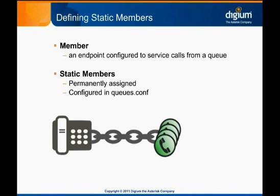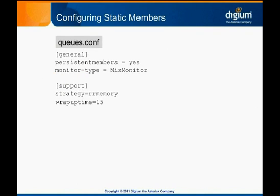Static queue members are configured directly in queues.conf. We will add our new static members to the queues.conf example we started in the previous module. We configure a simple static member by typing 'member =>' followed by the member name, written just like in the dial plan as technology slash device name. There are a few additional options that can be specified after the member name, but we won't cover them in this course. queues.conf.sample describes these options if you'd like to learn more.